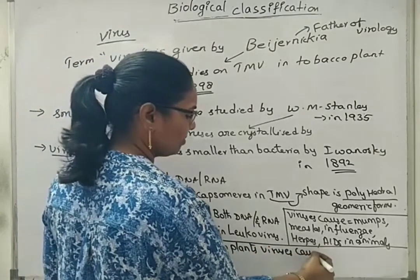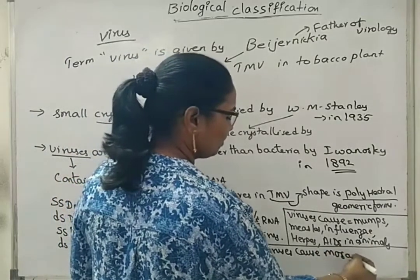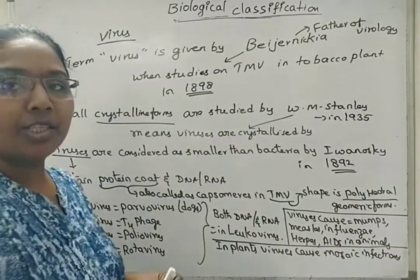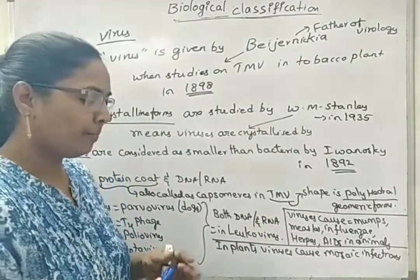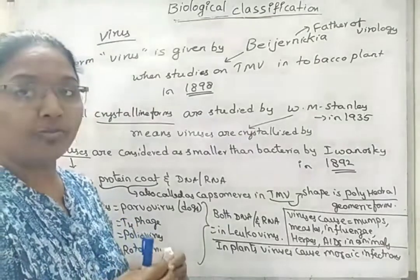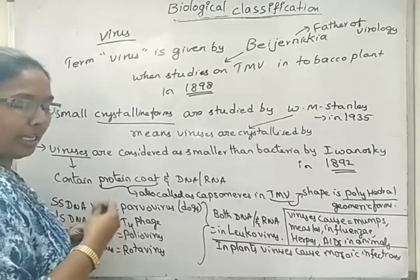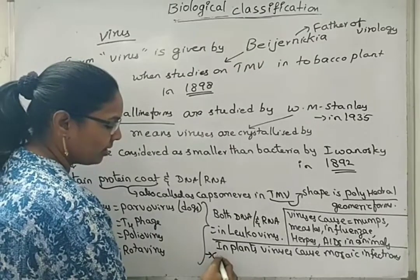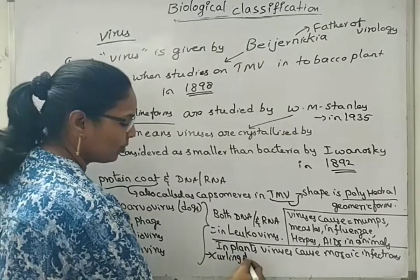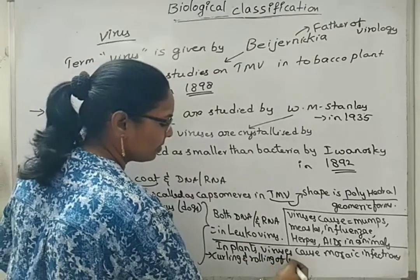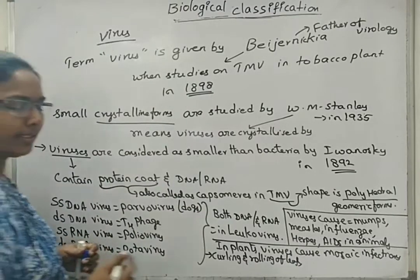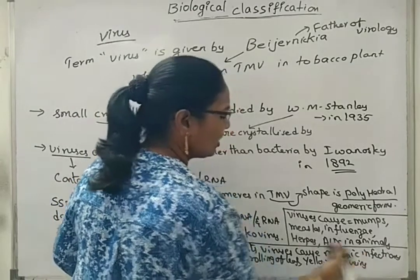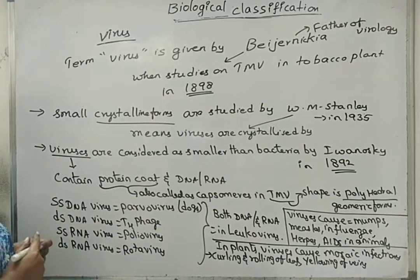Viruses cause mosaic infections in plants. For example, chilli mosaic virus causes mosaic infection. The symptoms include rolling of leaf, curling of leaf, yellowing of veins, and dwarfing of the plant.